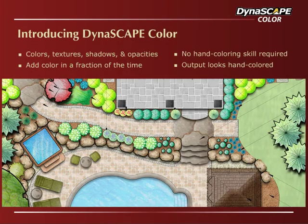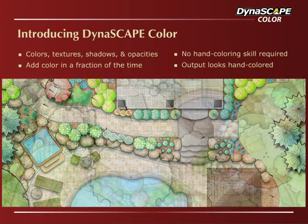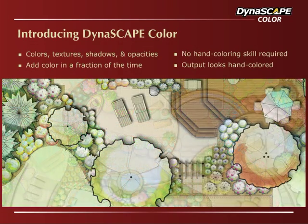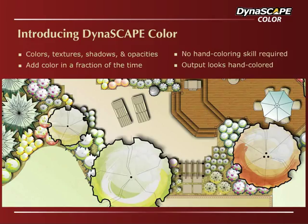Dynascape Color is a one-of-a-kind module that lets you take your completed Dynascape designs and add stunning colors, textures, shadows, and opacities in a fraction of the time that it would take you to color them by hand. It gives you the tools to produce spectacular renderings regardless of your drawing or coloring ability, and its output matches the quality of even the most detailed hand-colored designs.